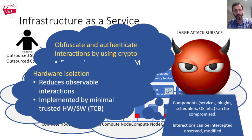Second, we can use hardware isolation, which reduces observable interactions and eliminates attack points. Hardware isolation is implemented by and bootstrapped from a trusted hardware-software design called a trusted computing base, the TCB. This requires trust in the assumption that the TCB is not vulnerable to attack. The smaller the trusted computing base, the more trust we generally feel.